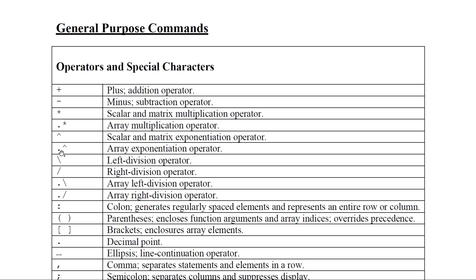Left division is a divided by b, right division is b divided by a. Similarly you have dot-right-division where each element will be divided. The colon operator is normally used in the for loop — for example, 1 colon 1 colon 10 means it starts from 1, incremented by 1, and goes up to 10.